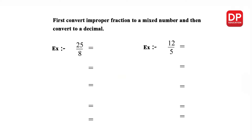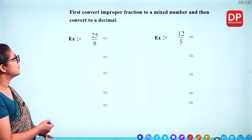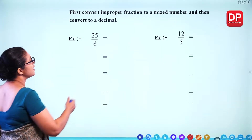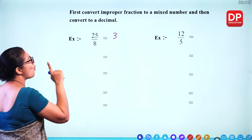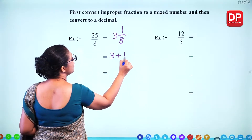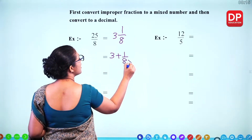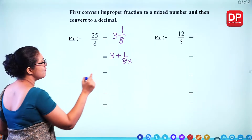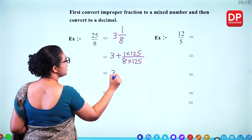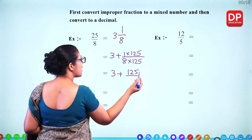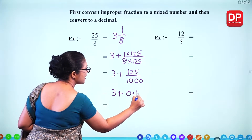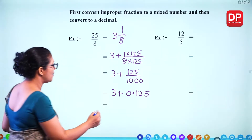First convert an improper fraction to a mixed number, then convert to a decimal. For 25 over 8: using long division, how many 8s for 25? That is 3, and 8 times 3 is 24 with 1 remaining. So it becomes 3 and 1 over 8. Then multiply by 125 to get 1000: 1 times 125 = 125 over 1000. Move the decimal place 3 places to the left to get 0.125. So the answer is 3.125.